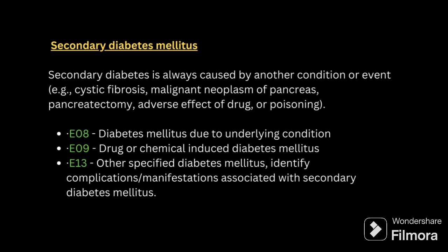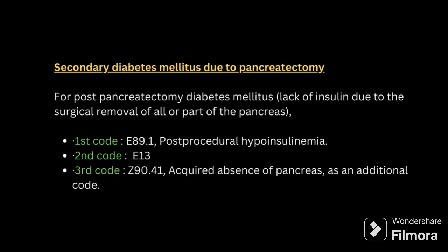Next is secondary diabetes. Secondary diabetes is always caused by another condition or event. Examples include: cystic fibrosis, malignant neoplasm of pancreas, pancreatectomy, and adverse effect of drug or poisoning. We have three codes for secondary diabetes — E08 for underlying condition, E09 for secondary diabetes due to drugs, and E13 for other specified diabetes.